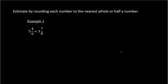Example 1: we have 5 and 4/6 plus 3 and 7/8. With each of these numbers, we need to figure out if it's closer to a whole number or to the half. For 5 and 4/6, we're determining if it's closer to 5, 5 and 1/2, or to 6. This is pretty close to 5 and 1/2 because 3/6 is 1/2 exactly, and 4/6 is pretty close to that.